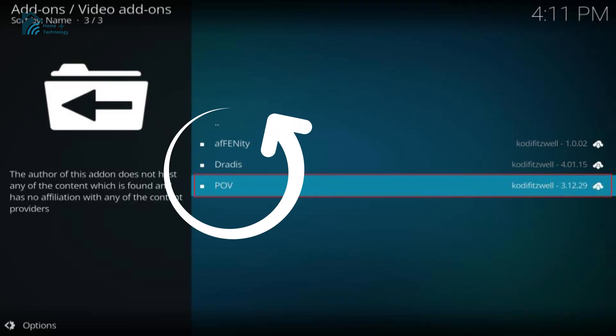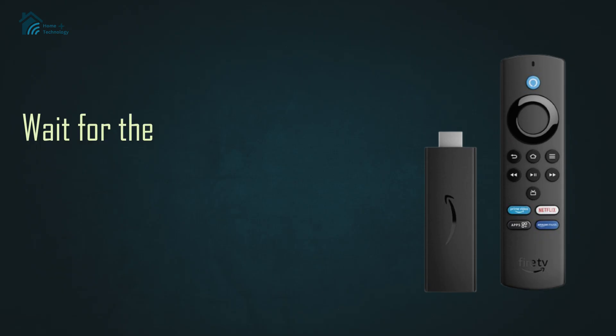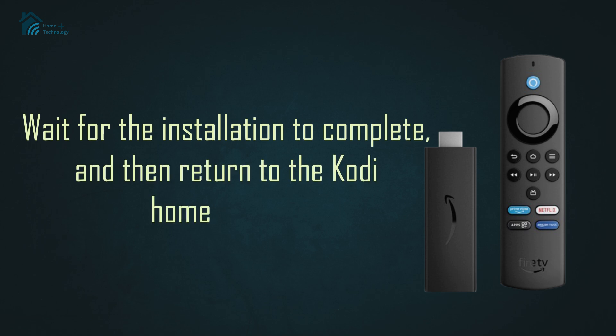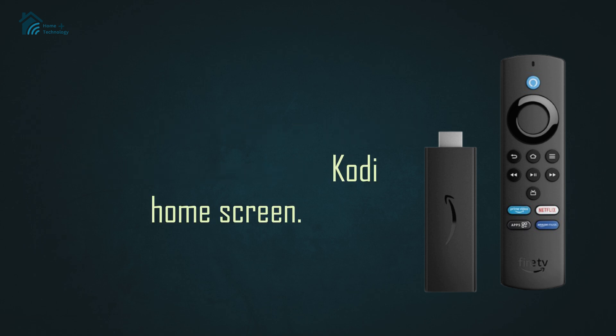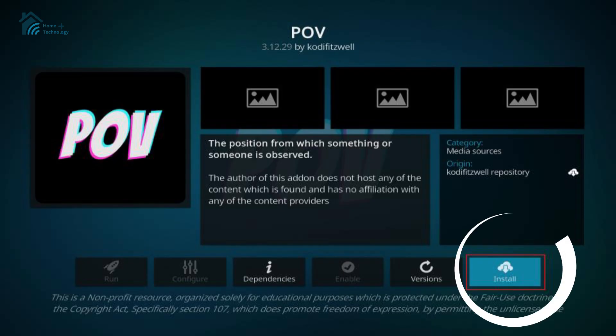Click on the POV Addon and select the option to install. Wait for the installation to complete and then return to the Kodi home screen. You will now see the POV Addon listed under your installed add-ons.